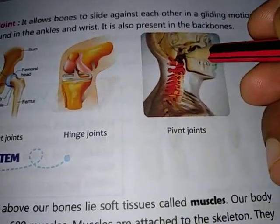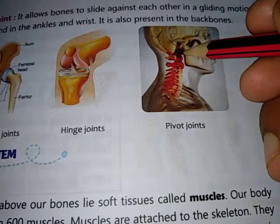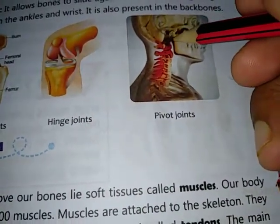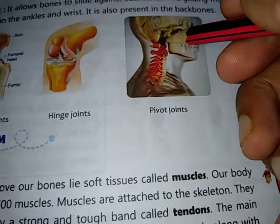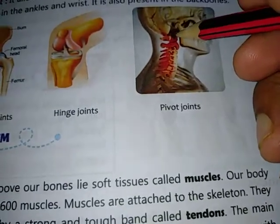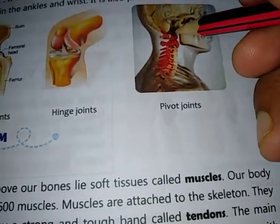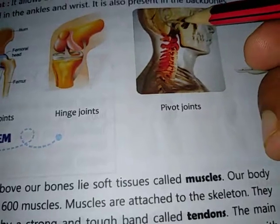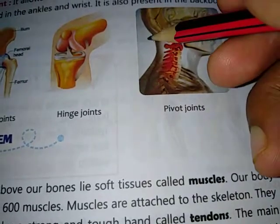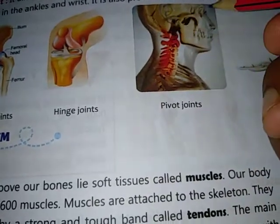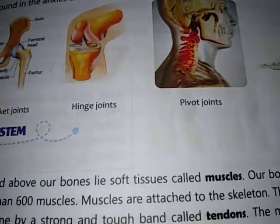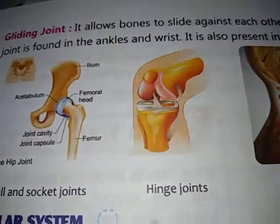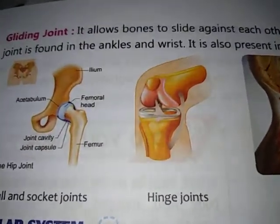In this diagram you can see the pivot joint. There is a ring in the skull and a rod-like bone here which gets fit into the skull, and which allows your head to move from one side to another.